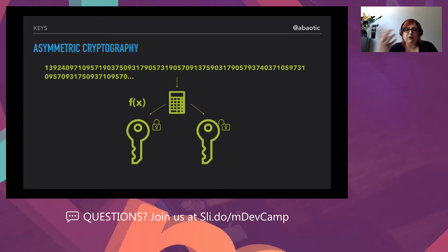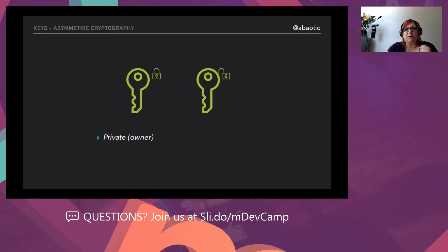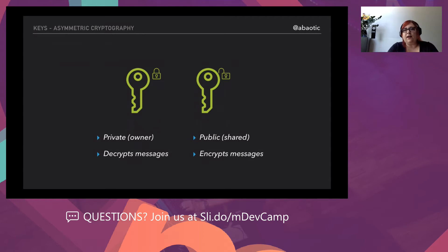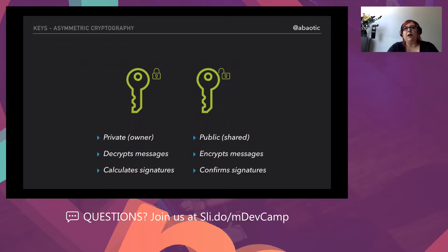One key is private, one is public. What is very important is that the private key is exclusively and solely known to the owner. If I generate a key pair, only I can know the private key. The public one can go anywhere — I can distribute it to colleagues, to other servers, basically anywhere. The private key is usually used to decrypt messages and the public one to encrypt them. This is how we establish a private conversation where only I can read what you send me.